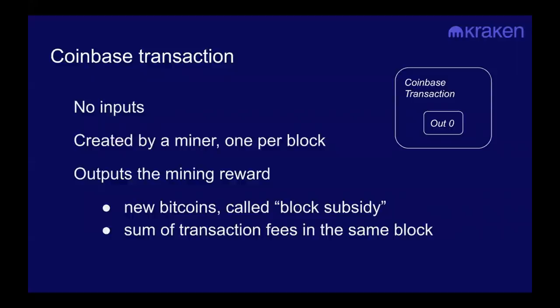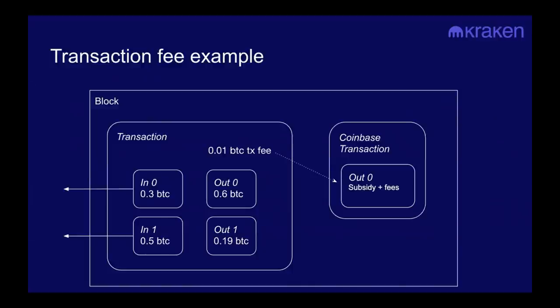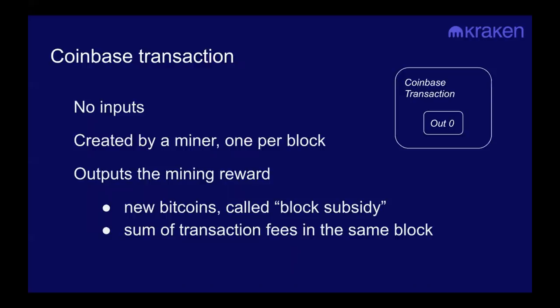The Coinbase transaction is created by a miner. It's special because it doesn't have any inputs — the coins come from the subsidy. When we're talking about the Bitcoin halving, we're specifically talking about the subsidy. The subsidy is verified by the whole network to make sure the miner is not creating more Bitcoin than allowed. There is one Coinbase transaction per block, and the output address is generally controlled by the miner or mining pool. That's how the miner is compensated for the proof of work they did.